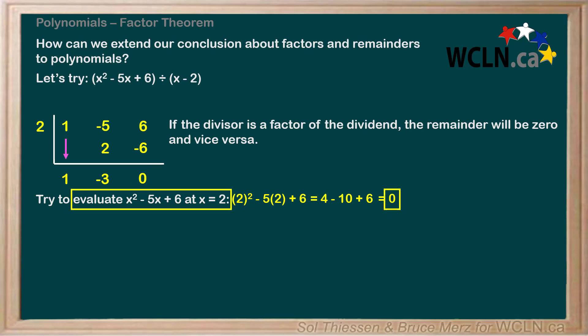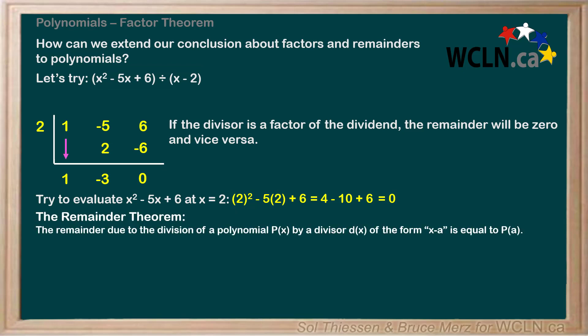So, evaluating the dividend polynomial at x equals 2 gives us the remainder due to division by x minus 2. Did you expect this? Hopefully, you already knew that this would be the case from your understanding of the remainder theorem, which says that the remainder due to the division of a polynomial p of x by a divisor d of x of the form x minus a is equal to p of a.